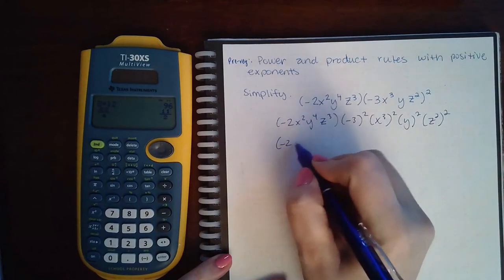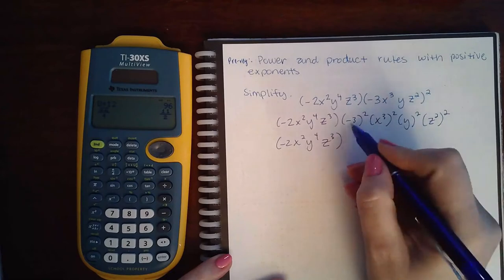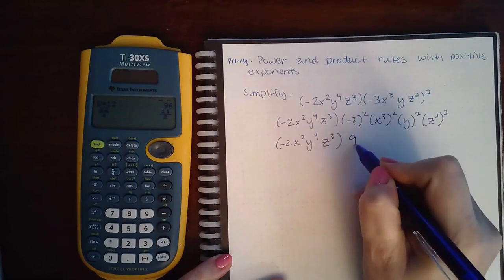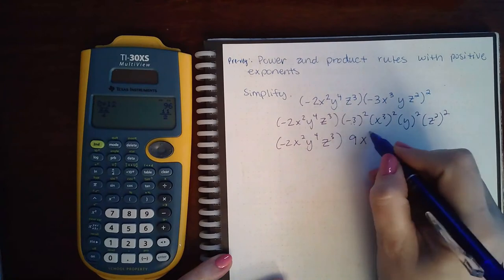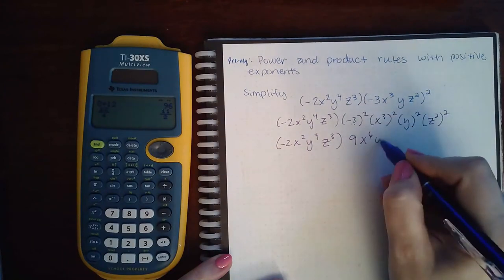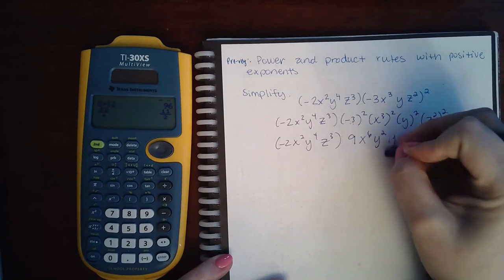And so then what I end up with is negative three times negative three is positive nine. X to the third squared is X to the sixth. Y squared is Y squared. And Z squared squared is Z to the fourth power.